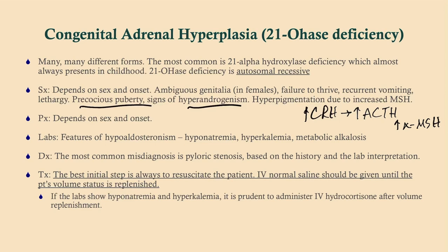The labs will likely show features of hypoaldosteronism: hyponatremia, hyperkalemia, and a metabolic alkalosis. The diagnosis — if this happens in infancy — can be confused with pyloric stenosis because both will cause vomiting. The best initial step is always going to be resuscitation if needed, but once you make the diagnosis, you need to replace the corticosteroids with hydrocortisone and the mineralocorticoids with fludrocortisone.